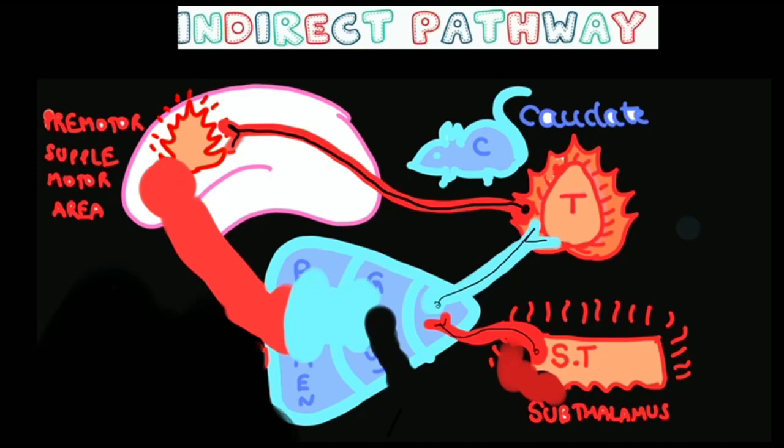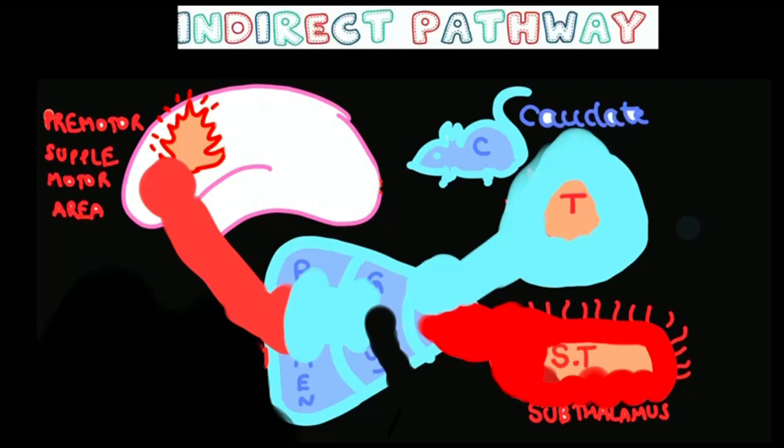to fire maximally, so the GP interna also fires and puts lots of ice over the thalamus. The thalamus doesn't fire to the premotor area, so no movement happens. It inhibits the antagonist muscle—thus the indirect pathway inhibits antagonist muscles.